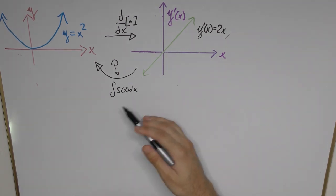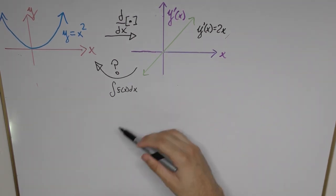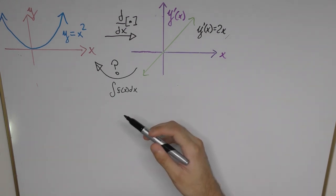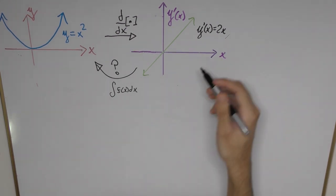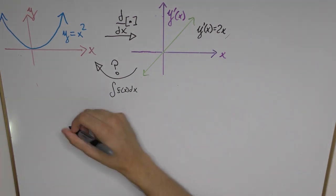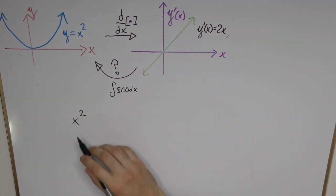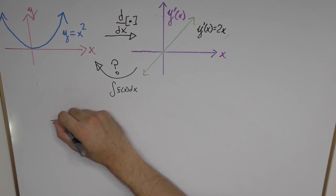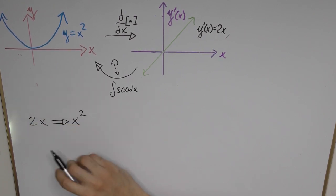Now how can we actually construct a general formula that would allow us to find the integral of any polynomial function? Well we can start off with this simple example here and we know that we have the original function x squared and what we would like to do is we would like to start off from 2x.